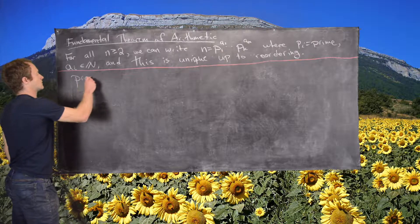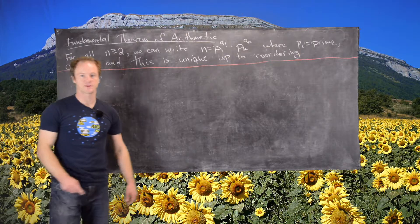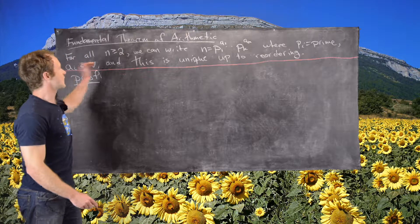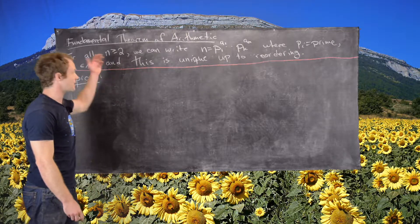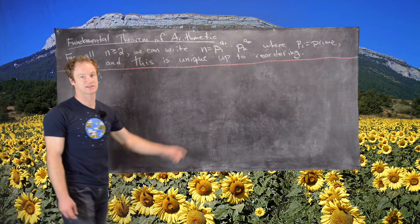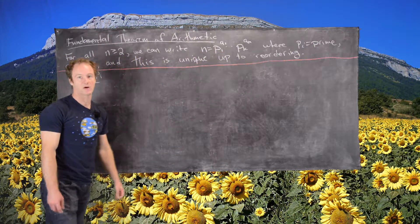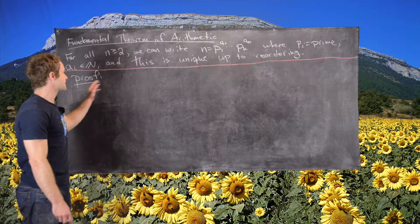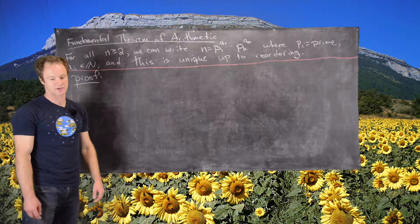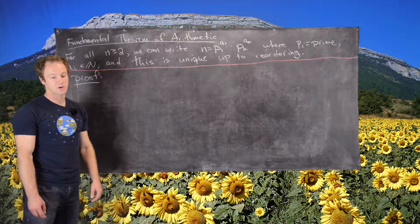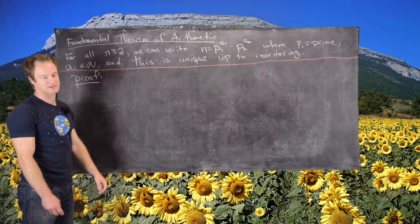So now we're ready for this proof. We have two things to do: first, we need to prove that for all natural numbers bigger than 2, there exists a representation as a product of powers of primes, and next we need to show that that representation is unique up to reordering. We'll first show that there is a representation.